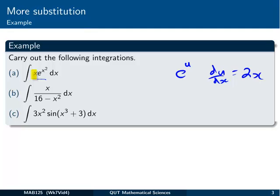Similarly, in the next example, 16 minus x squared, the function on the bottom, we can think of that as u. The derivative of u would be minus 2x. Minus 2x and x are just constant multiples of each other.